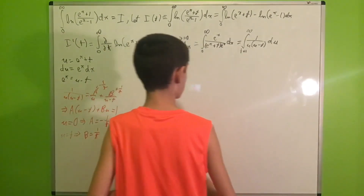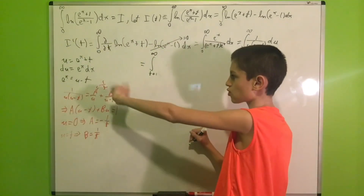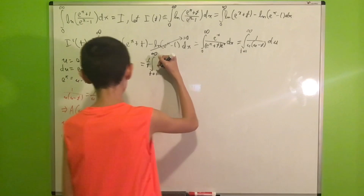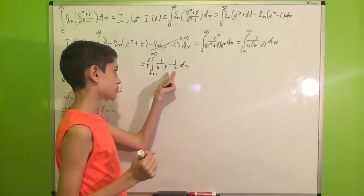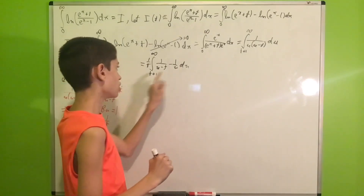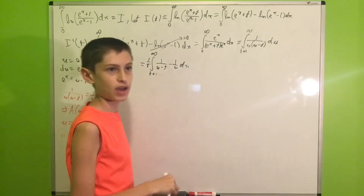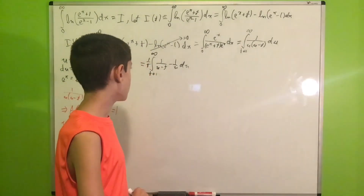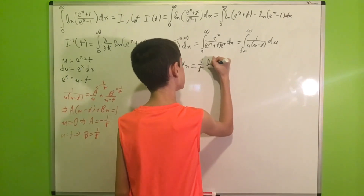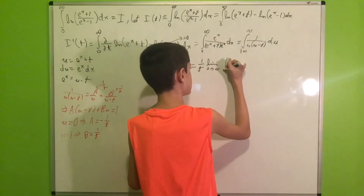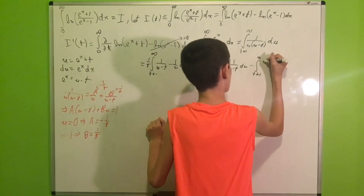We can now substitute everything in. So we get I'(t) as the integral from t+1 to infinity of (1/t) · [1/(u − t) − 1/u] du. If we were to split this into two integrals and then subtract them, we would get infinity minus infinity, which is an indeterminate form. So we will have to use limits. We rewrite this as (1/t) · limit as a → ∞ of: the integral from t+1 to a of 1/(u − t) du minus the integral from t+1 to a of 1/u du.